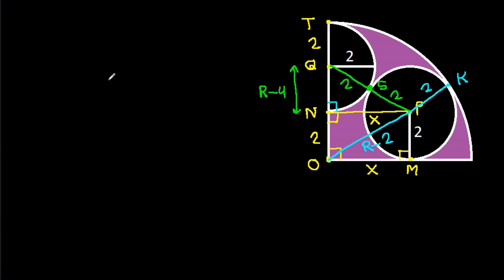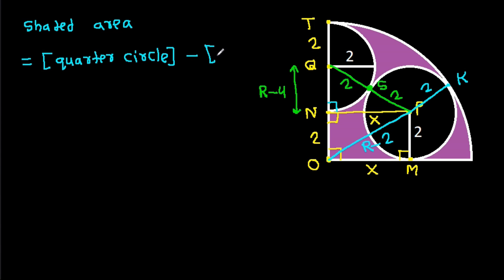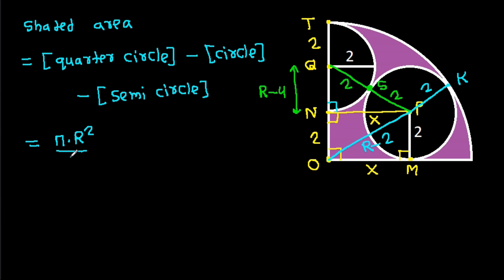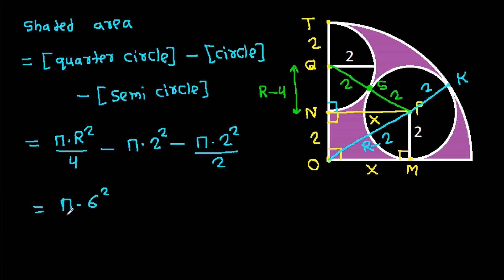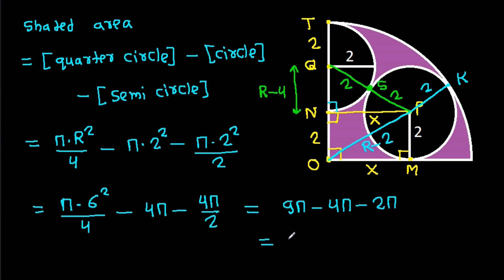Now the shaded area equals the area of the quarter circle minus the area of the circle minus the area of the semicircle. That is (π × 6²)/4 − π × 2² − (π × 2²)/2 = 9π − 4π − 2π = 3π.